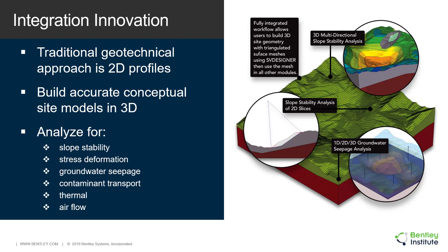Traditional modeling focuses on a profile. What we're looking at here is the concept of building the complete 3D site — the whole open pit with all substrata and all faulting — and then looking at 2D or 3D analysis as a second stage. You can do 2D or 3D groundwater analysis or slope stability analysis, which is up to the professional judgment of the engineer. The software supports this improved workflow where you can easily analyze any slice in 2D or 3D.